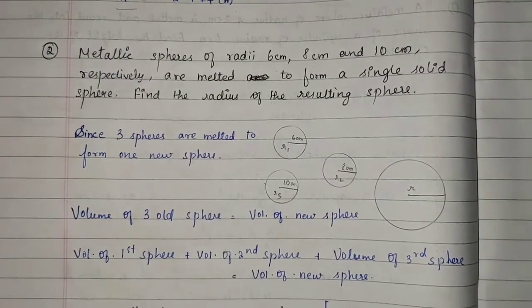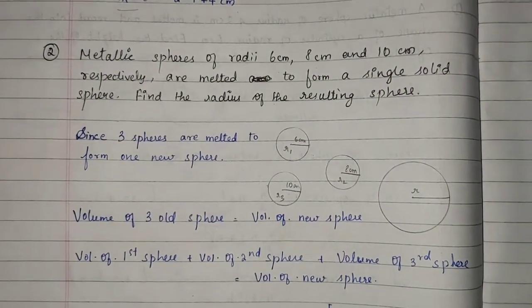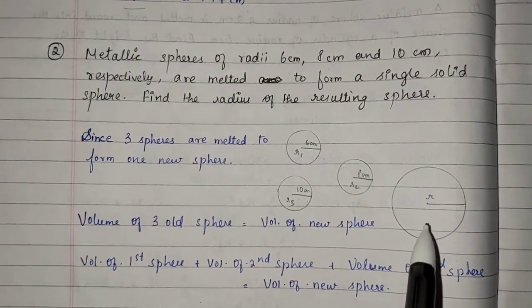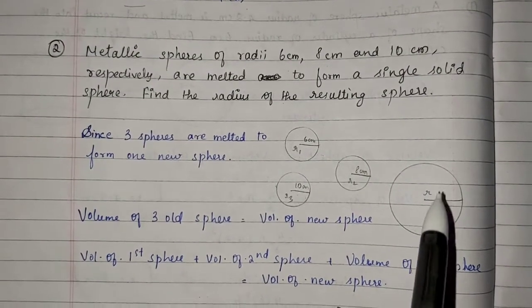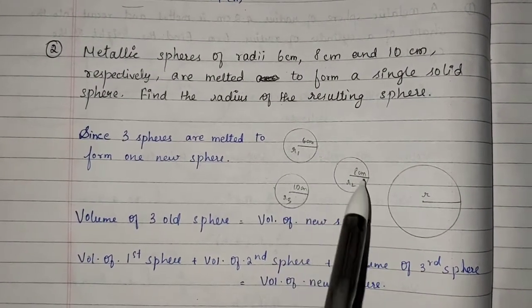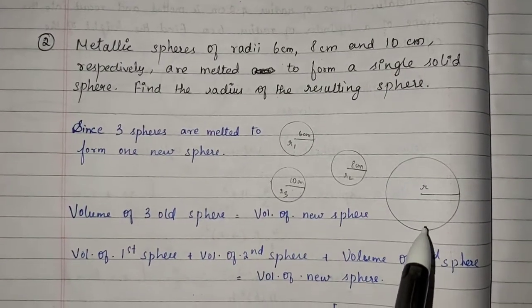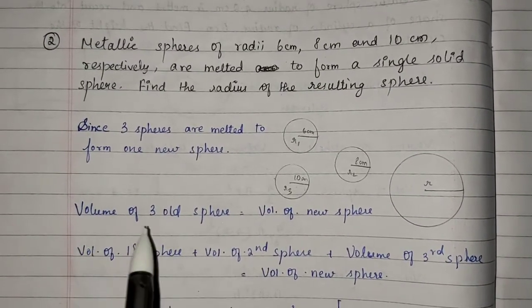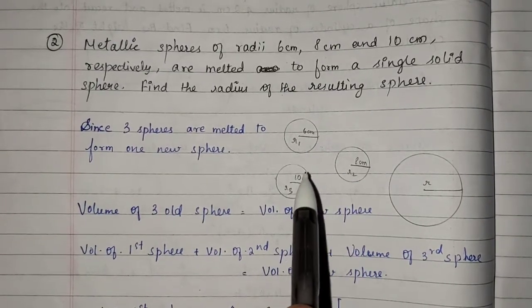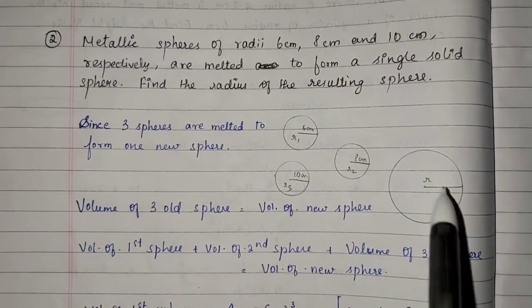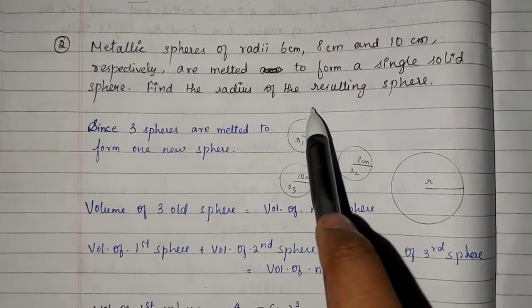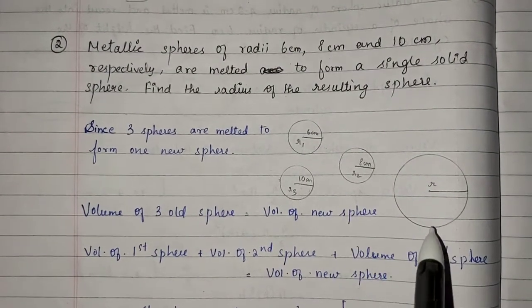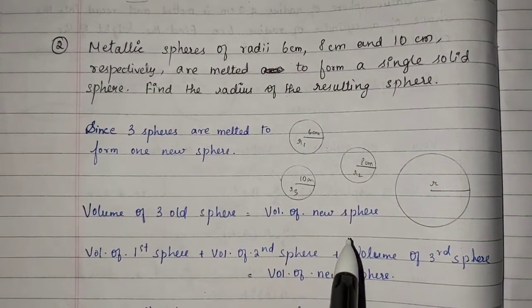We need to find the radius of the resulting sphere. Since the three spheres are melted into one solid sphere, the volume of the three spheres will be equal to the volume of the new single sphere.